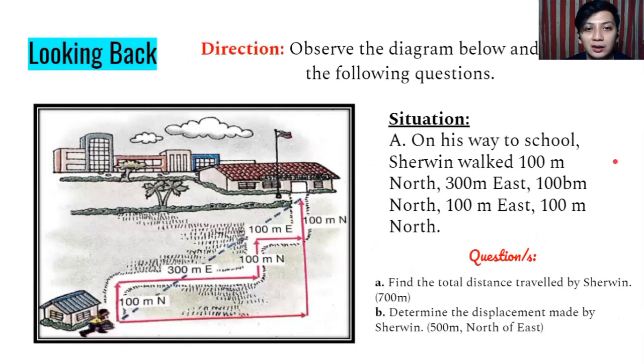Let's have a look back. For our looking back, observe the following diagram below and answer all the following questions. The situation is letter A. On his way to school, Sherwin walked 100 meters north, 300 meters east, and 100 meters north, and 100 meters east again, and 100 meters north. The questions are, find the total distance traveled by Sherwin, and letter B, determine the displacement made by Sherwin.